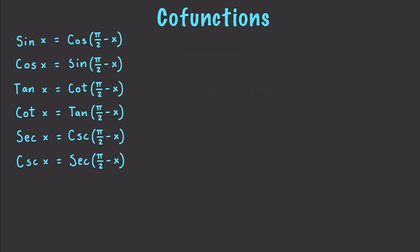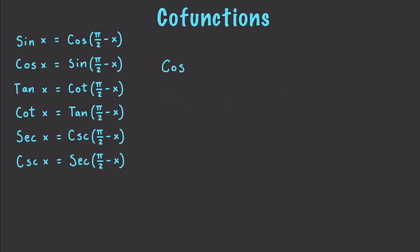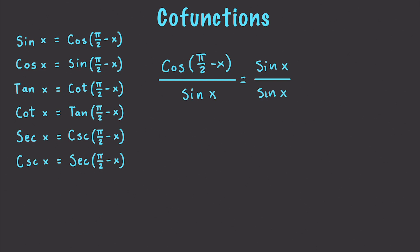Let's do another problem. What if we have cosine of pi over 2 minus x minus 4 sine of x? This equals sine of x minus 4 sine of x, which equals negative 3 sine of x. Let's do one more: cosine of pi over 2 minus x divided by sine of x. This equals sine of x over sine of x, which equals 1.